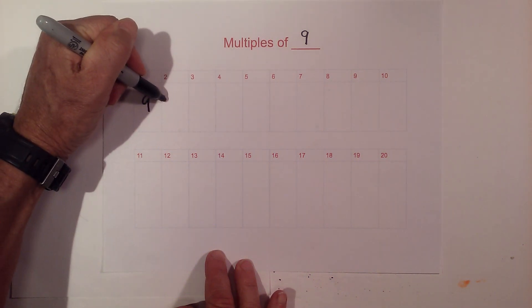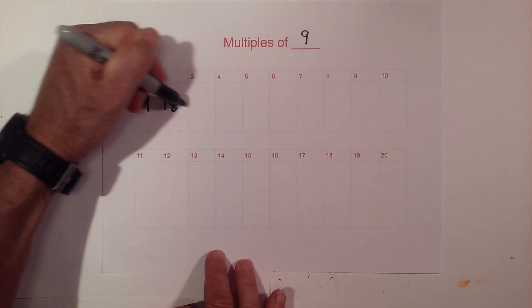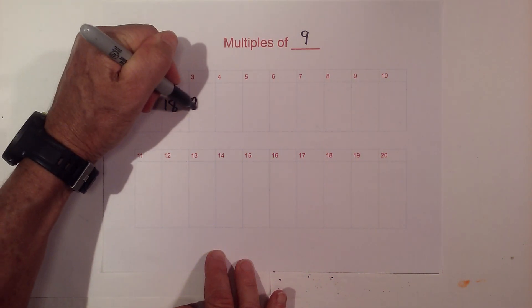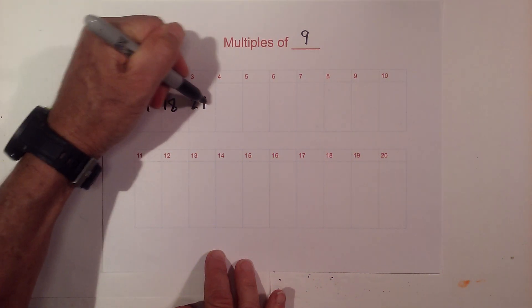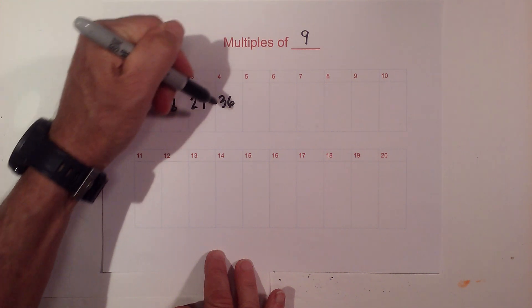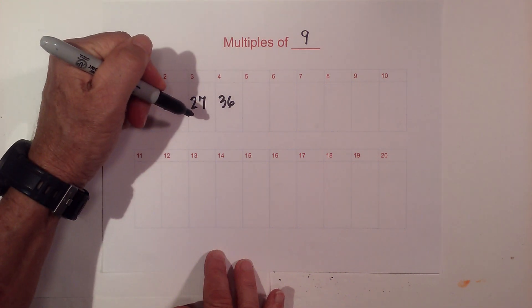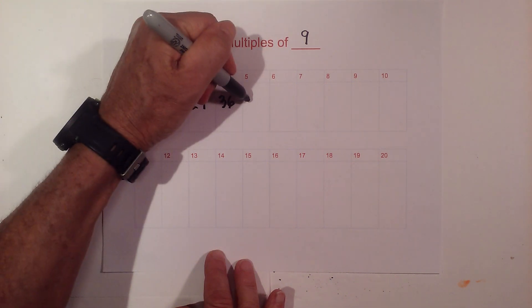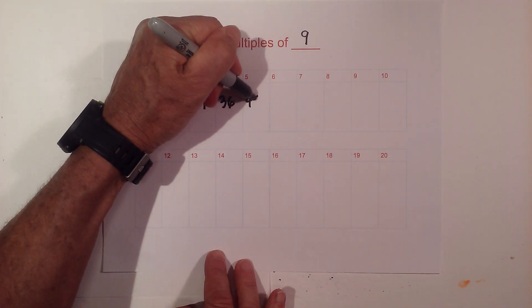9 times 1 is 9, and we have 18, 27, 36. Notice that it goes down by 1 each time.